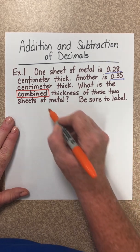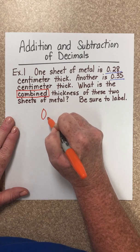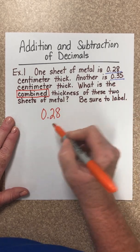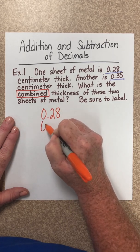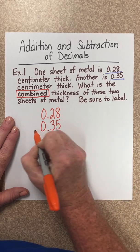So let's add. Let's take the first number, 0.28. Let's be careful to line up our decimal points, 0.35, and we're going to add.